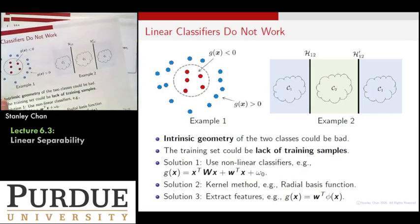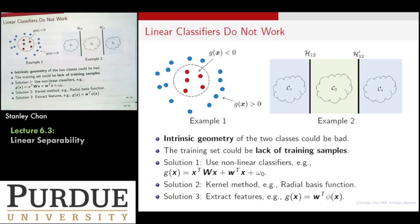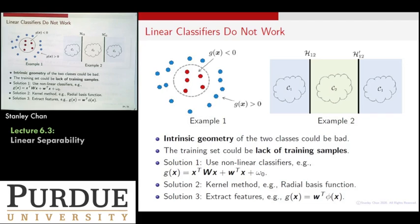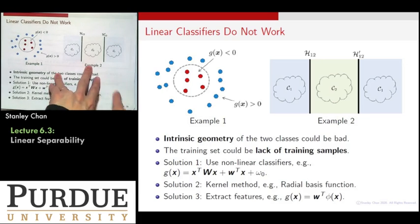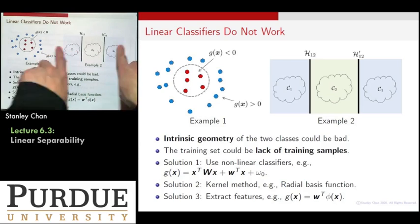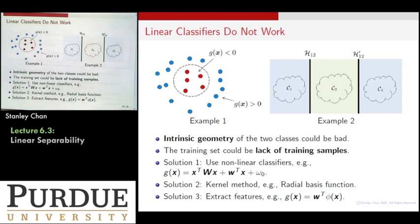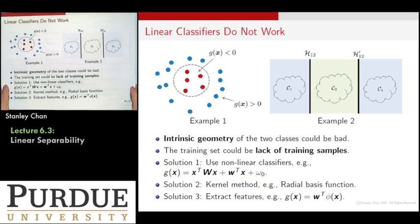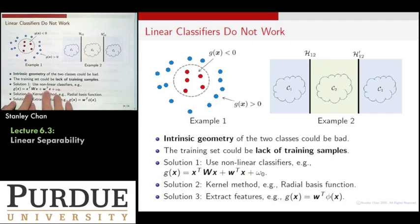Linear classifiers have limitations. Here are two cases where you have limitations. One is that this set intrinsically doesn't allow you to have linear separability. Like what? You have a circle inside, you have dots outside. Another case is you have class C1 that occupies the two sides of the space, and then C2 that lives in the middle. That also doesn't allow you to find one plane that can separate the two together. So what you can do is the following. There are three solutions. One is that you need to use a nonlinear classifier. For example, instead of using w transpose x plus w0, you can also include a second order term. That's the nonlinear classifier.